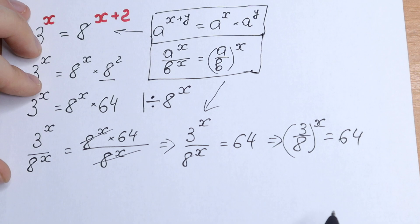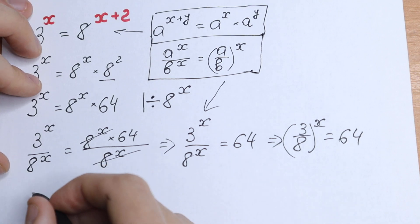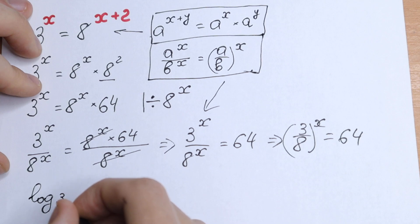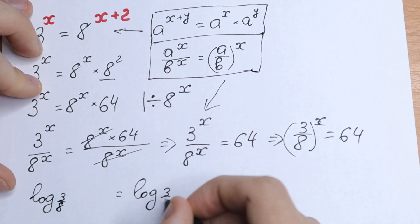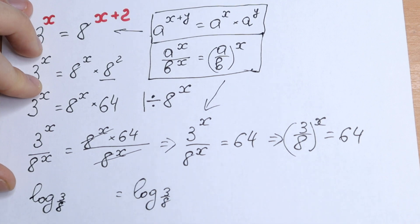Then we will have only our x and this is a little bit faster for us. We will have log base of 3 over 8 on the left equal to log base of 3 over 8 on the right. So let's take a log from both sides.